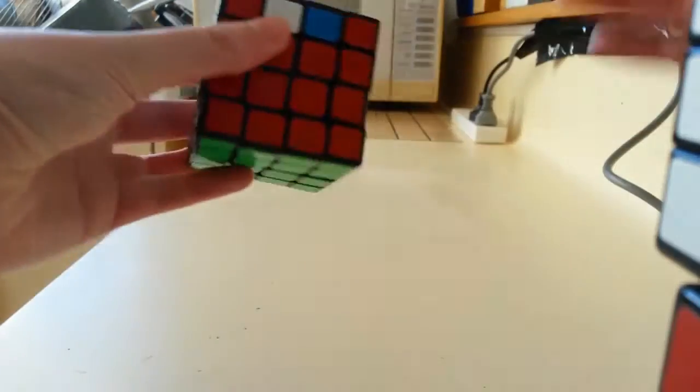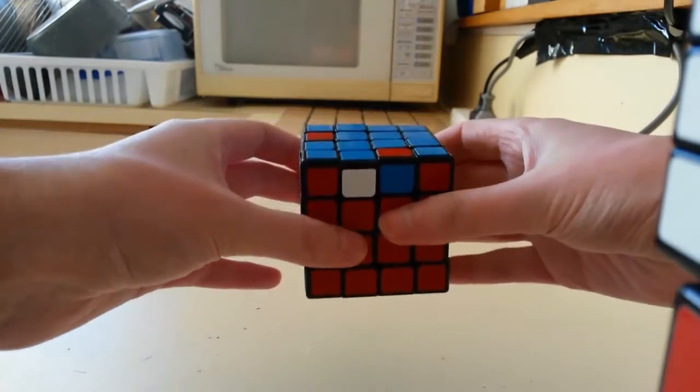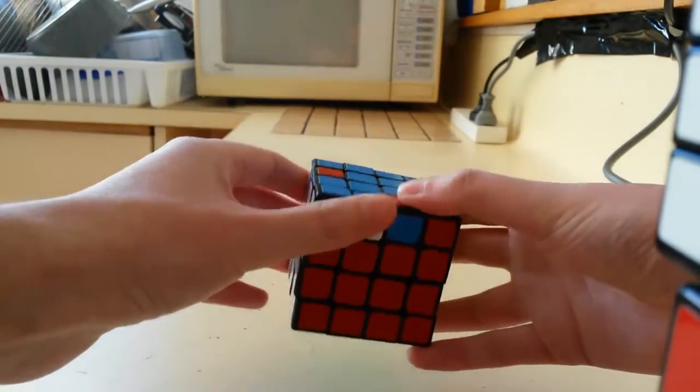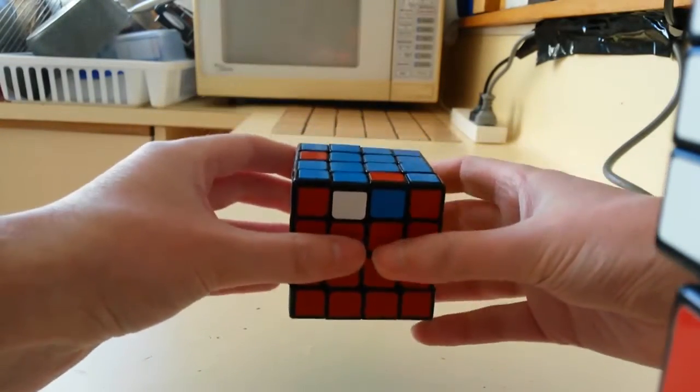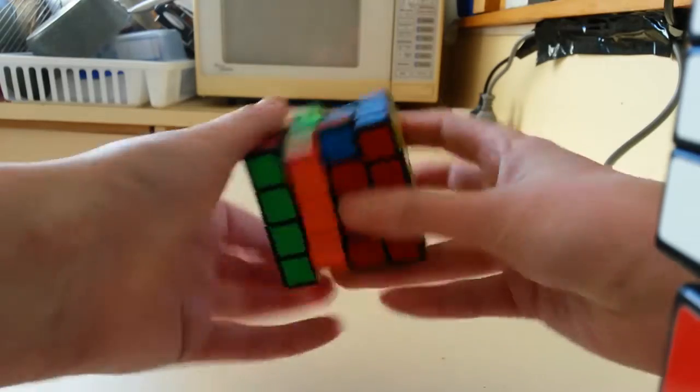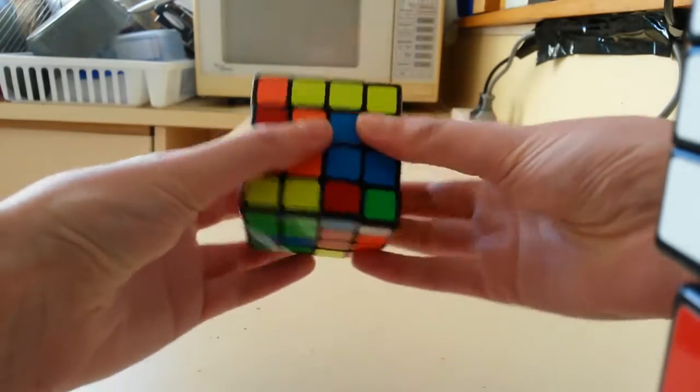The setup moves should be fairly easy and intuitive, but there are a couple of hard cases. Basically, if you have an edge stuck to another edge, just do a slice move to unstick it.